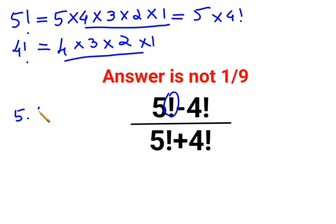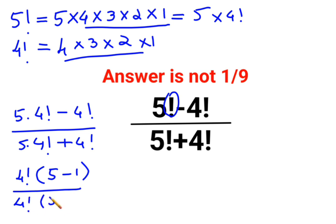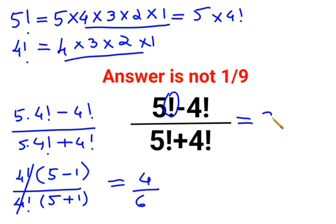So we have 5 multiplied by 4 factorial minus 4 factorial. What we do is take 4 factorial common — we are left with 5 minus 1 in the numerator. Taking 4 factorial out again, we are left with 5 plus 1. This and this gets cancelled. You are left with 5 minus 1 which is 4, and 5 plus 1 which is 6. So when you reduce it further, it becomes 2 upon 3.